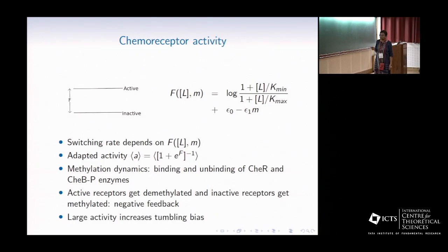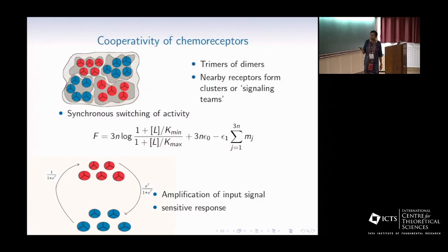For methylation, it plays the role of a negative feedback, that means active receptors get demethylated, and inactive receptors get methylated. Therefore, if the activity becomes too high or too low, the methylation adjusts the free energy accordingly, such that it gets back to its average value.